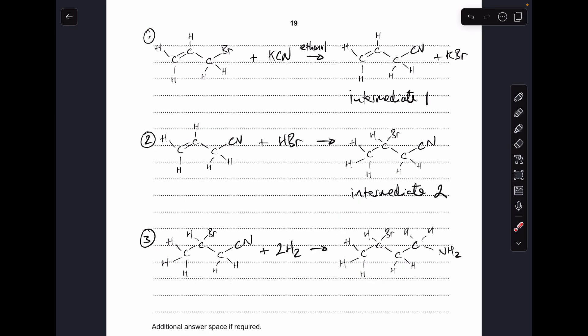So in terms of an answer, step one: we've got the reaction of the haloalkane with the KCN in ethanol and there's intermediate one. The other product is going to be KBr in this case.